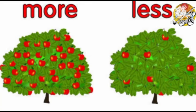And these are trees. On the first tree, so many apples are there. And on another side, the tree is having less apples. So this is called less.